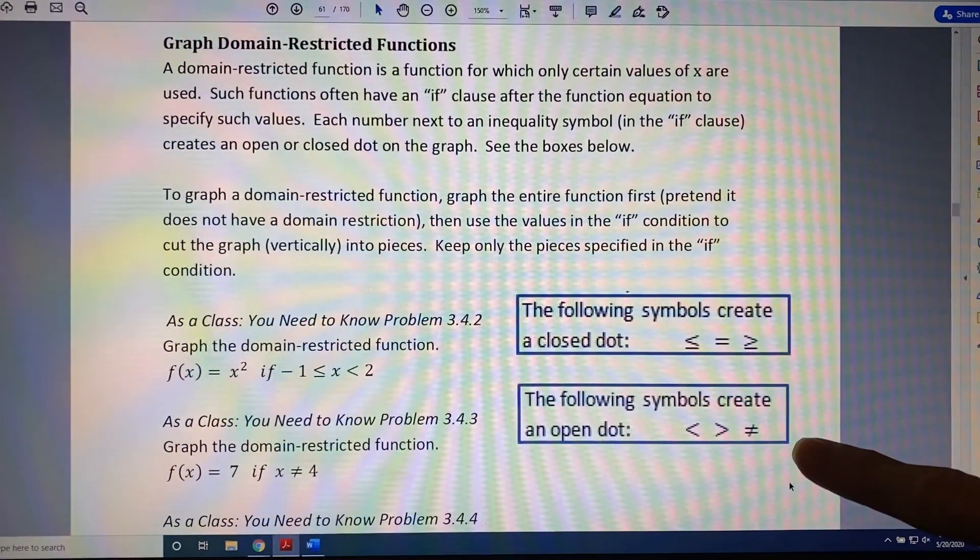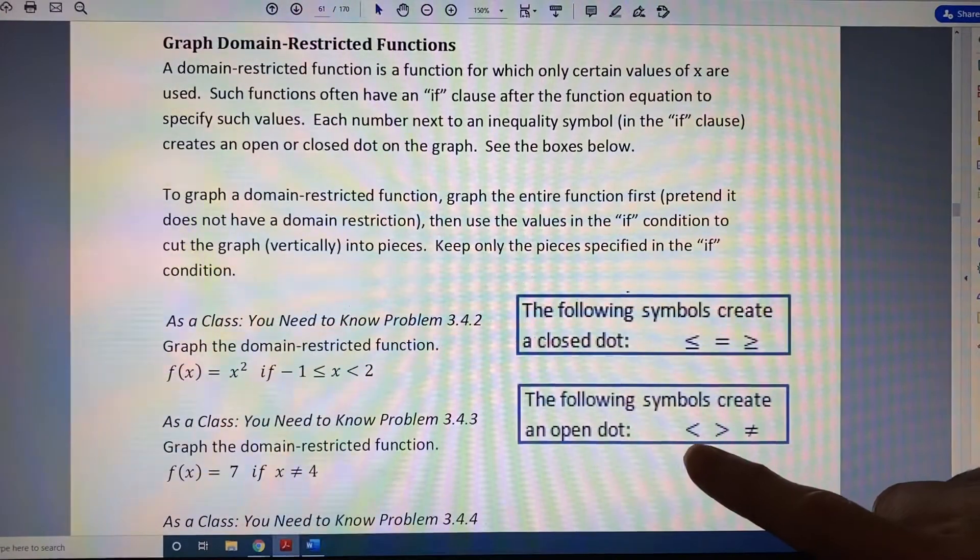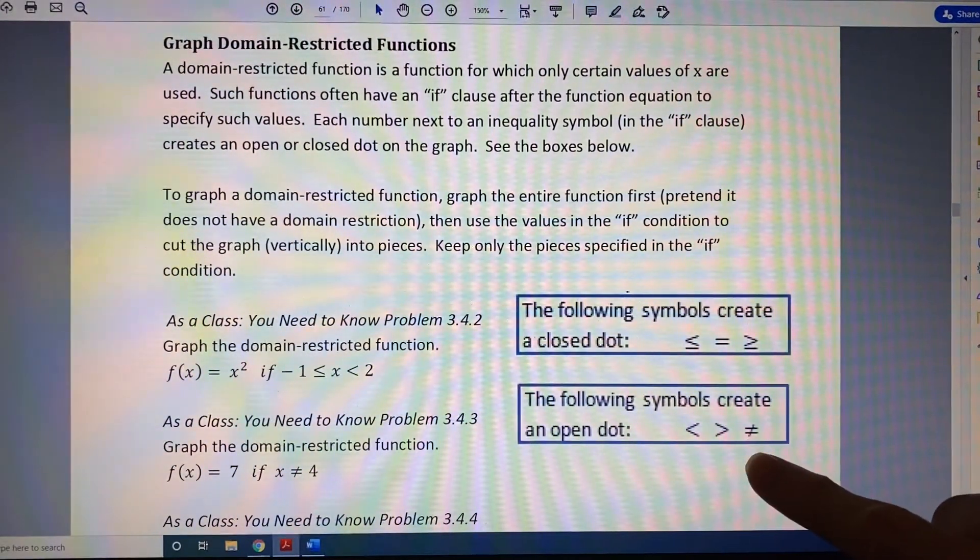The following symbols create an open dot: less than, greater than, or not equals.